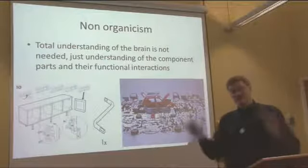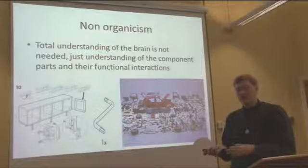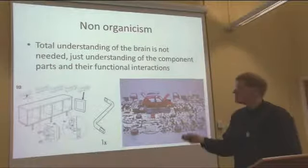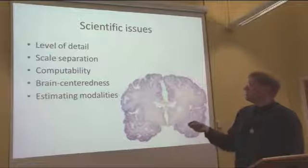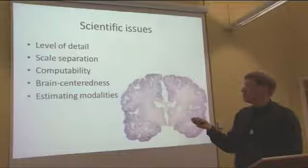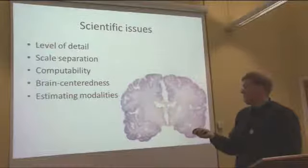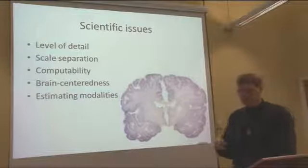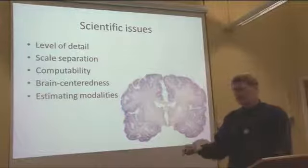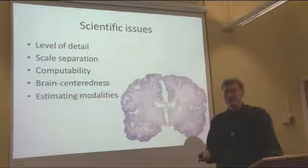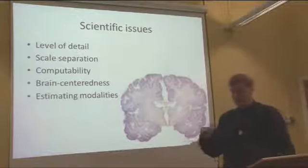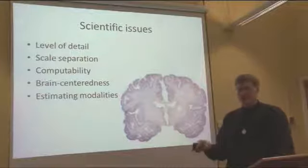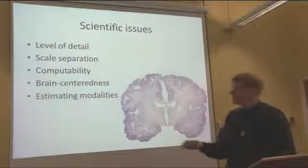From a scientific perspective, there are other important issues. What level of detail do we need to scan the brain on? Can we separate the dynamics on different scales to make it feasible? Is the brain even a computable system? From the orthodox neuroscience perspective, there is no evidence that the brain is engaged in uncomputable processes, though some people claim there are quantum-level processes that matter — an ongoing debate between neuroscientists and physicists.